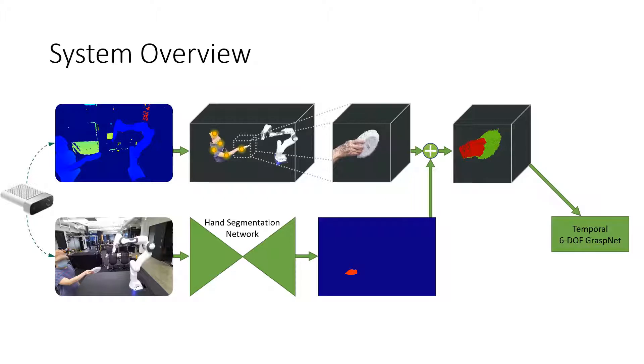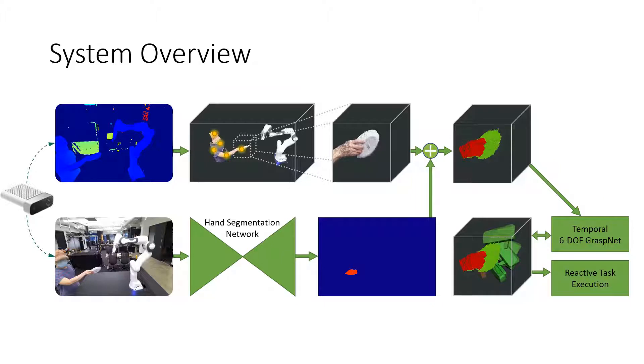Given the object point cloud, we use 6DOF GraspNet to generate grasps. Finally, the system removes grasps that are colliding with the hand and selects the best grasp and executes the handover through reactive task planning.